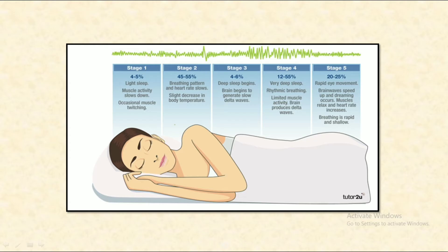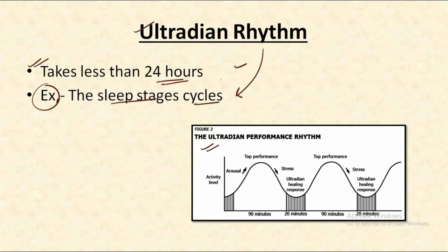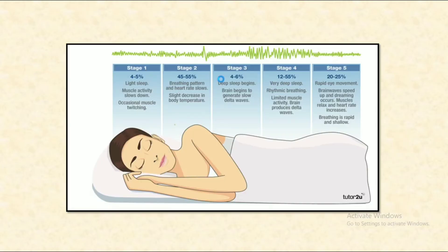In our sleep cycle we mainly have five stages: stage one, two, three, four, and five. In the first stage we have four to five percent of light sleep. In stage two, the breathing pattern and heart rate slow. In stage three we have four to six percent of our sleep getting completed, and so on. Just remember that the sleep cycle is the most common example of ultradian rhythms, which take less than 24 hours to complete.